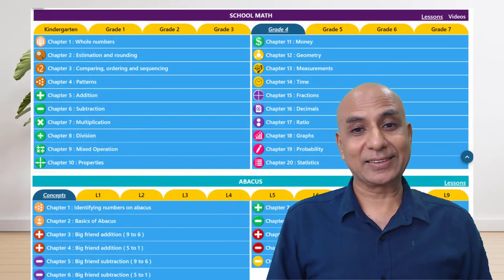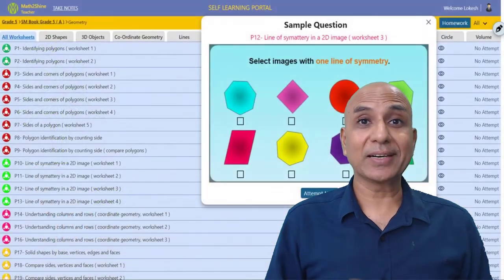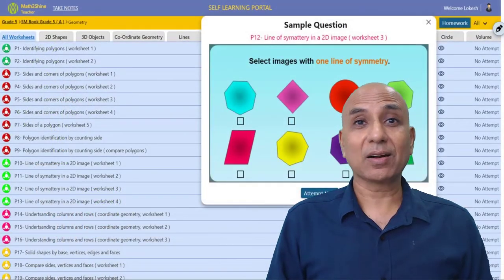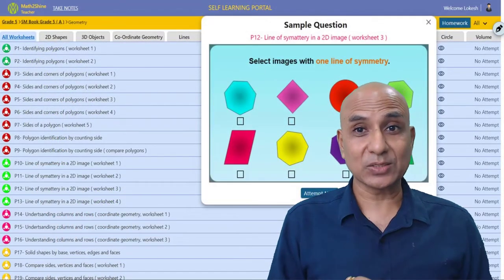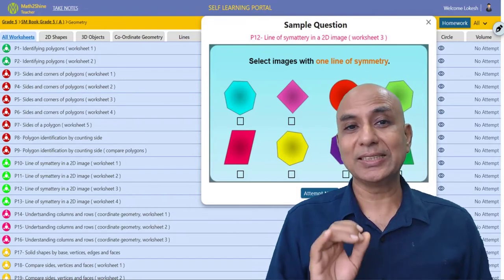We use the same model to define curriculum math and Abacus later. We now have over 1100 Vedic Math, around 2100 school math, and 500 Abacus worksheets in the system.